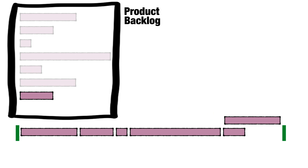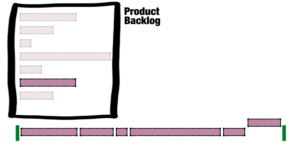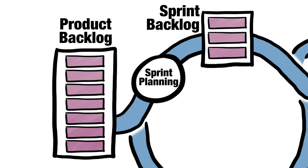Could it be that creating a Sprint Backlog is as simple as taking items from the top of the Product Backlog until the story points equal the capacity — perhaps with a bit of jiggling around at the end to fill the space? If it was as simple as that, there'd be a button to do it in Jira. There's not a button for that — or is there? Not a clue.